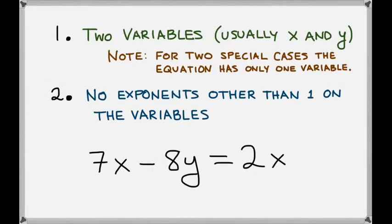Let's look at another one. How about 7x minus 8y equals 2x? Here we have the two variables x and y. Now be careful here. It might look like we have three variables, but x is only one variable, even though it shows up twice in the equation. So yes, we only have two variables.